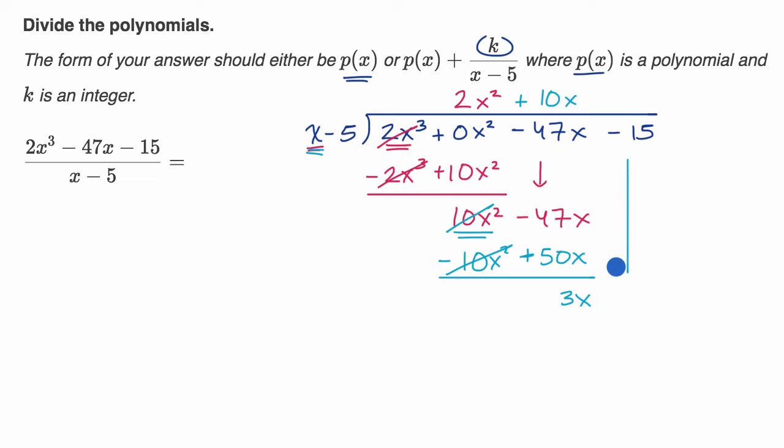Now negative 47x plus 50x is positive 3x. And then 10x squared minus 10x squared gets canceled out. Bring down that 15. Come on down. I used to watch a lot of prices right, growing up. Never quite made it to the show.